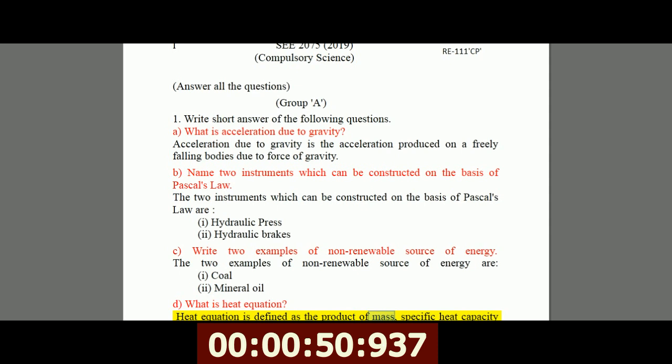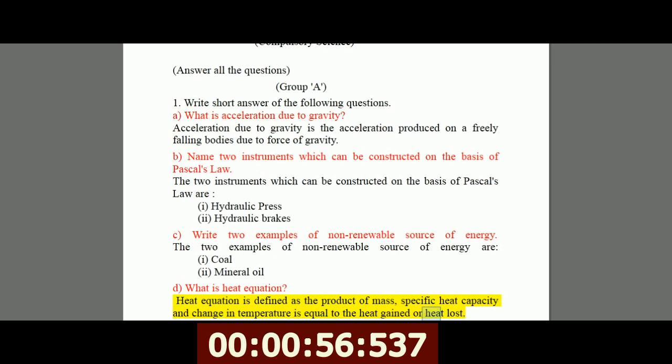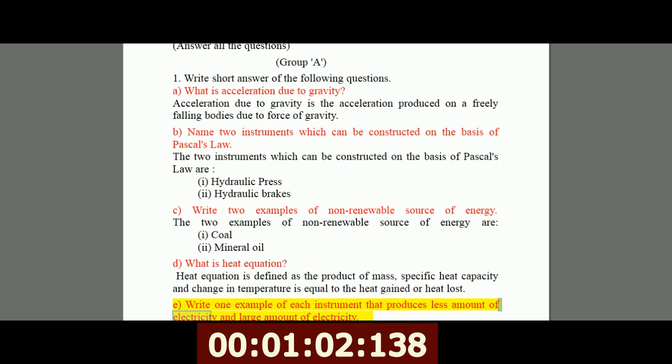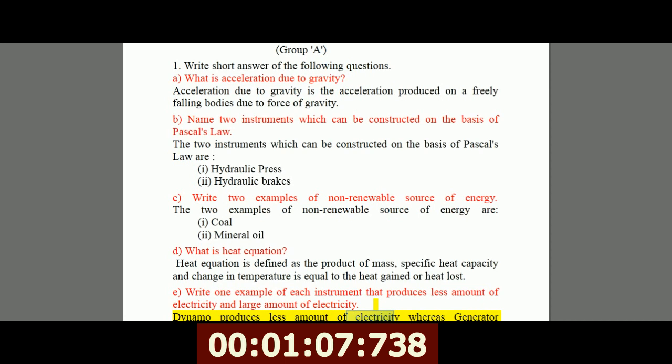D, what is heat equation? Heat equation is defined as the product of mass, specific heat capacity, and change in temperature is equal to the heat gained or heat lost. E, write one example of each instrument that produces less amount of electricity and large amount of electricity. Dynamo produces less amount of electricity, whereas generator produces large amount of electricity.